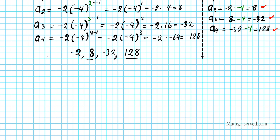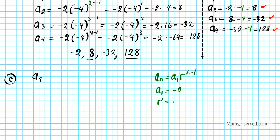Let's move on to part c. For part c, we have to find the seventh term, a7. We're going to use the explicit formula: an equals a1 times r to the n minus one. A1 is negative two, the common ratio is still negative four, and n is seven because we're looking for the seventh term.